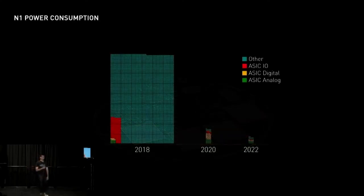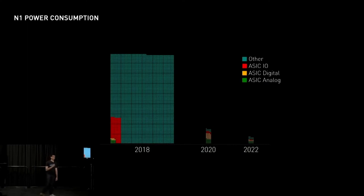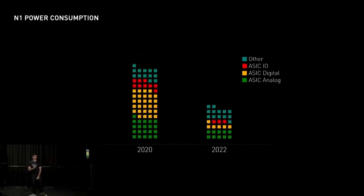Power consumption is important to us because we want to give future users a full day of use of their implant without any interruption for charging. Back in 2018, we were sending every sample from every channel off the device for processing, which burned a ton of power. In 2020, we brought spike detection onto the chip.